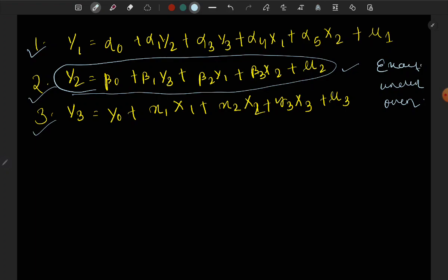There is a formula to solve this: n minus k equals g minus 1. If n minus k equals g minus 1, then the equation is exactly identified. If n minus k is greater than g minus 1, this is over-identified. If n minus k is less than g minus 1, then it is under-identified.